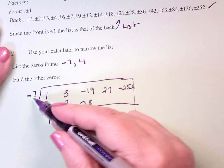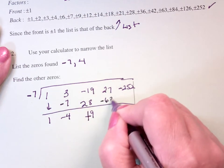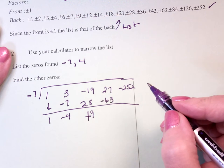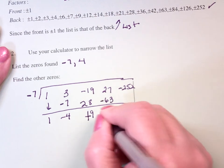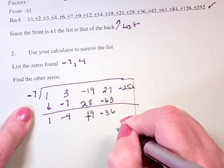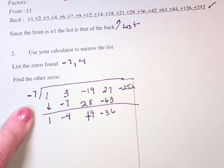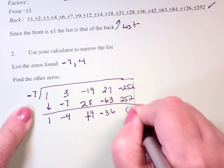And negative 7 times plus 9 is minus 63, and add, it's going to make my life miserable today, because my mind is not working. So, this is minus 27, is minus 36. And if all goes well, 7 times 36 should be, times 7, 252, and add, I get zero.